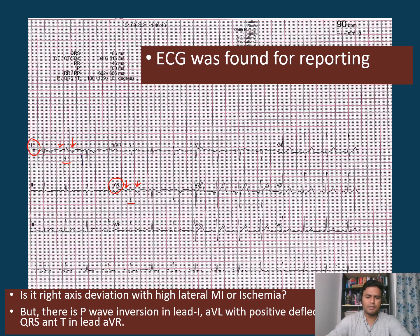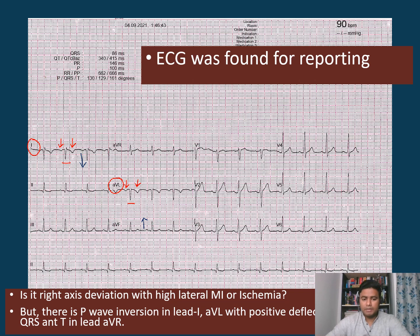Is it only right axis deviation with high lateral MI? As you can see, lead I is going down and lead AVF is going up — this is right axis deviation. The T inversion in lead I and AVL may indicate high lateral ischemia or possibly non-STEMI. So although those are possibilities, the inversion of the P wave points to something else.